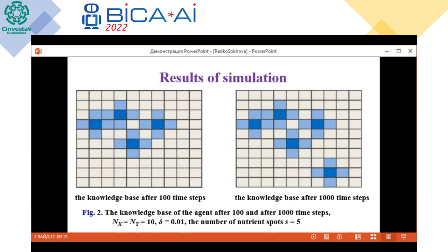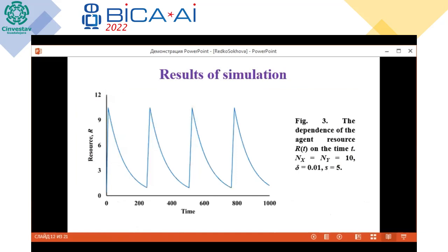After 100 time steps, the knowledge base is shown in one figure, and the knowledge base after 1000 time steps is shown in the next figure. After 1000 steps, all nutrient spots are discovered and information about these spots is included in the knowledge base. The dynamic of the agent resource is also shown: when the resource is small, the agent goes to eat, and when the resource is large, the agent investigates the world.